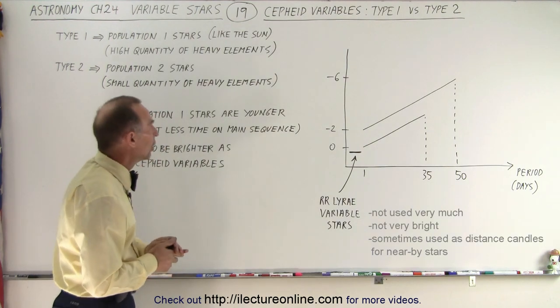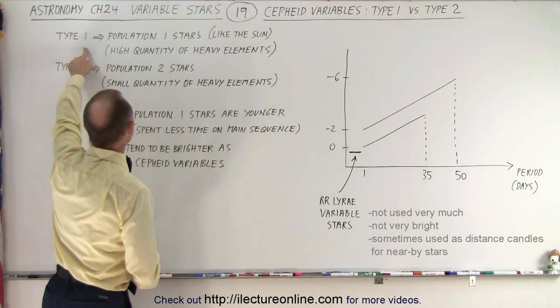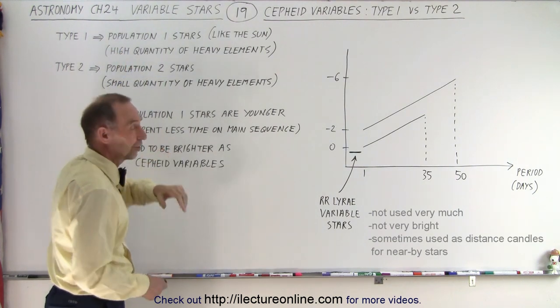So what's the difference between them? Well, it turns out that Type 1 Cepheid variables came from population 1 stars, like the Sun.